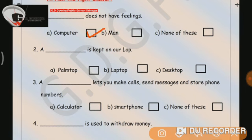Number 2: A dash is kept on our lap. A. Palmtop. B. Laptop. C. Desktop. Correct answer is, yes, laptop.